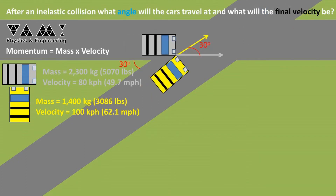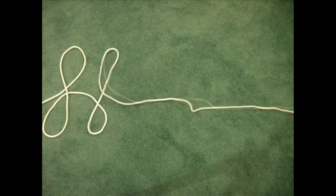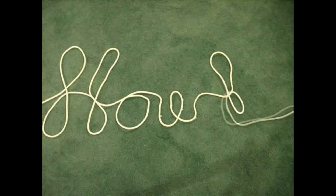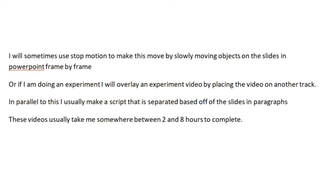Then I put all the slides together in a video editor. Fun fact: here is the first video I ever made for YouTube, back in 2008 for another channel. If I'm doing an experiment, I will overlay the experiment video by placing it on another track above the slide. In parallel, I usually make a script separated based on the slides and paragraphs. In the old days I used to just rattle off whatever I was thinking, but I found that I get a cleaner, more polished video if I script it out.